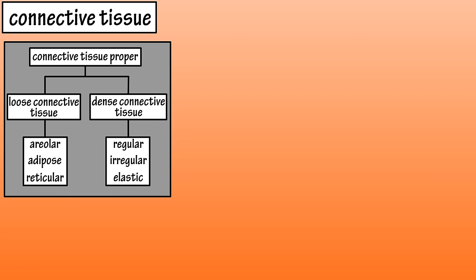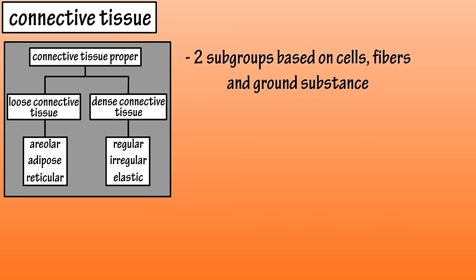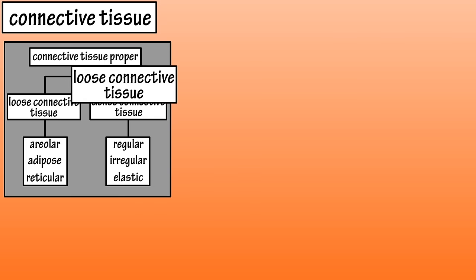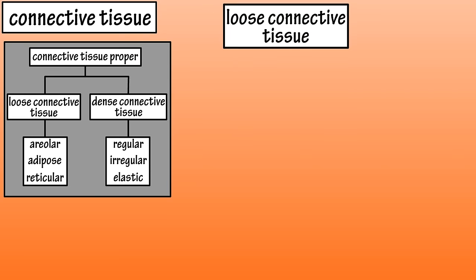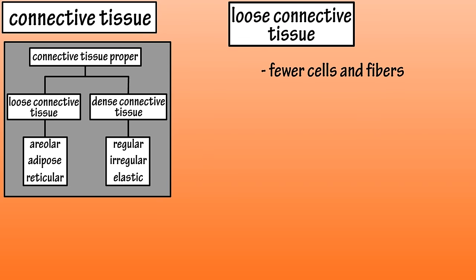Connective tissue proper, which is sometimes referred to as fibrous because it has many fibers in its extracellular matrix, is divided into two subgroups based on the proportions of cells, fibers, and ground substance. Subgroup one is loose connective tissue, and it has fewer cells and fibers and more ground substance than subgroup two, dense connective tissue.